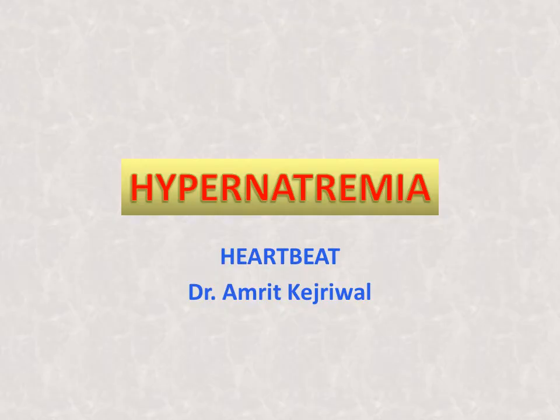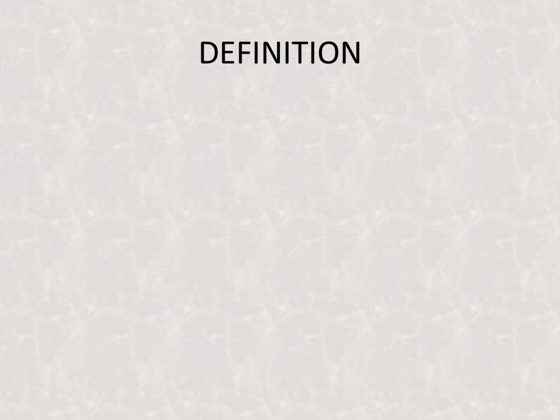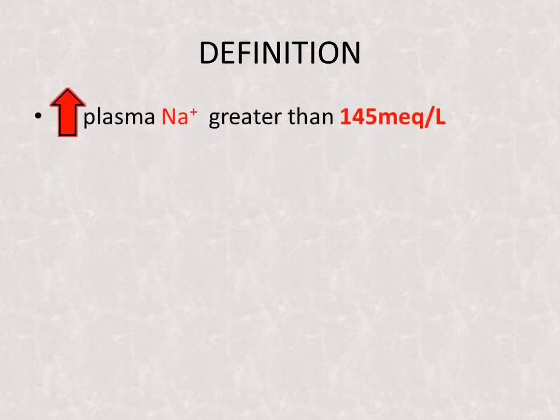Today we learn something about hypernatremia. Definition: plasma sodium greater than 145 mEq per liter. The normal range of sodium is 135 to 145. Less than 135 is called hyponatremia and more than 145 is hypernatremia. The entire medical sciences revolves on one basic principle: maintenance of homeostasis.